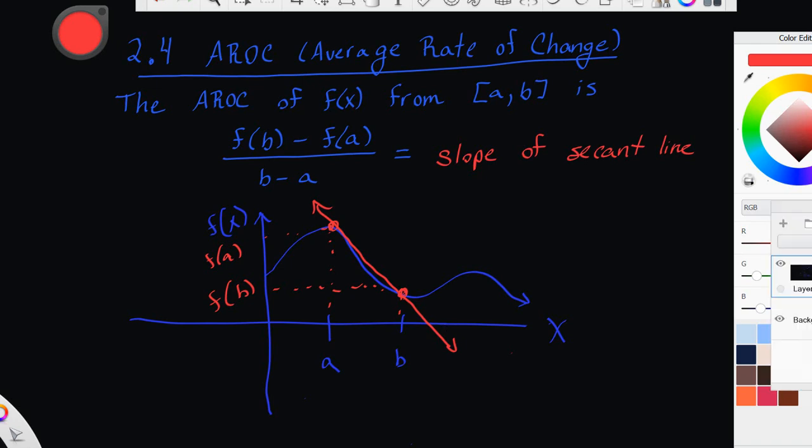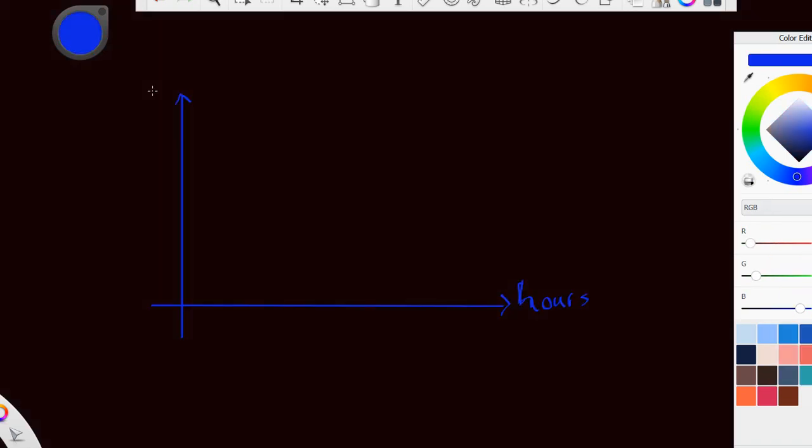So to get us started, we are going to look at some examples. So let's go ahead, and let's say that this is miles. And let's make that go 10, 20, 30, 40, 50, and 60.